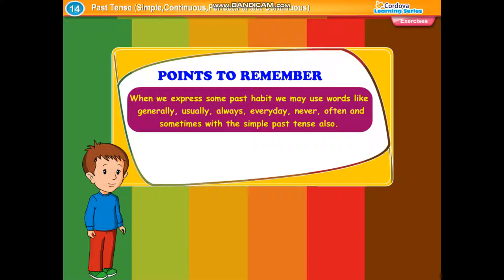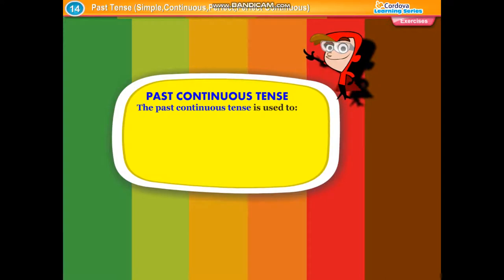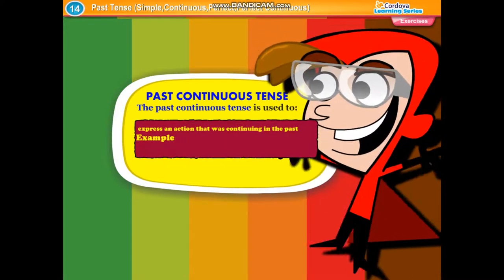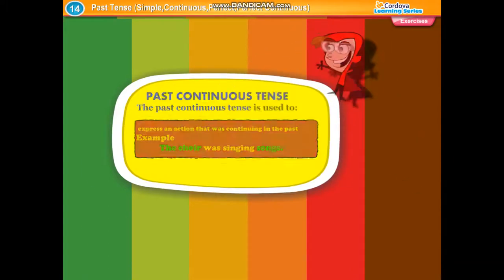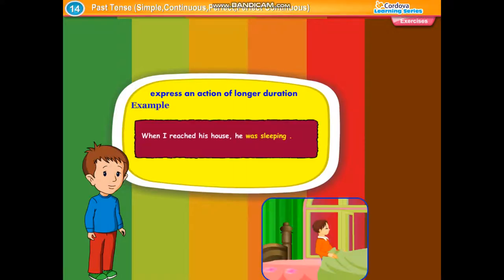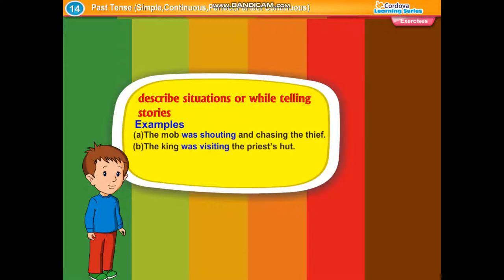Past continuous tense. The past continuous tense is used to express an action that was continuing in the past. Example: The choir was singing songs. It is also used to express an action of longer duration. Example: When I reached his house, he was sleeping. It is used to describe situations or while telling stories. Examples: The mob was shouting and chasing the thief. The king was visiting the priest's hut.